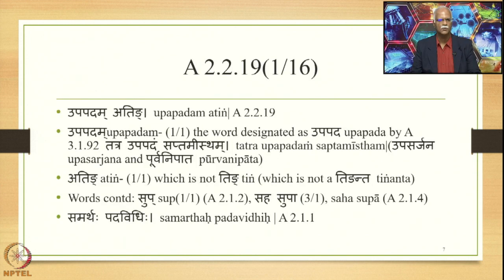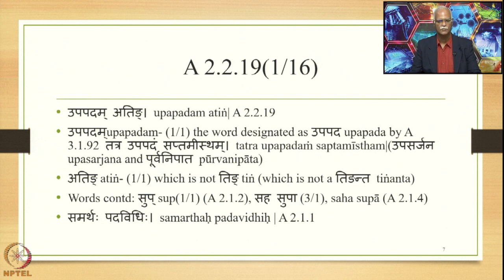The Upapadha Tatpurusha Samasa is stated by the Sutra Upapadam Ating, which is 2.2.19. This Sutra has got two padas: Upapadam and Ating. Upapadam is 1/1, meaning the word designated as Upapad by 3.1.92 — Tatra Upapadam Saptamishtham. Upapad is termed as Upasarjana by the Sutra Prathama Niradishtam Samasa Upasarjanam, and then Upasarjanam Purvam ensures that this Upapad occupies the initial position of the Samasa as Purva Nipata. Ating is also 1/1, which means which is not a tinganta. Words continued are Sup, Sahasupa, and Samarthapadavidhi.